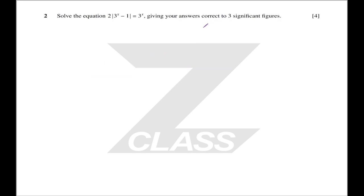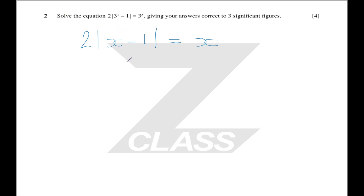Question 2: solve the modulus equation of 3x minus 1 equals 3 to the x, giving your answers correct to three significant figures. There are two steps to this question. The first is to solve the modulus equation by treating 3 to the x as just a thing we're solving for — essentially solving the modulus equation 2x minus 1 equals x. You can do this by squaring both sides or by putting in the plus or minus. The squaring is probably nicest.